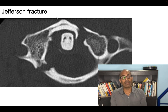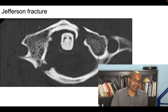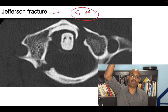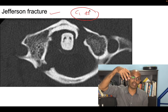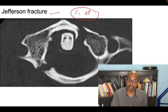The C1 fracture, or atlas fracture, is called a Jefferson fracture. This occurs due to axial compression to the head, causing the C1 (atlas) bone to fracture. It is called a Jefferson fracture.